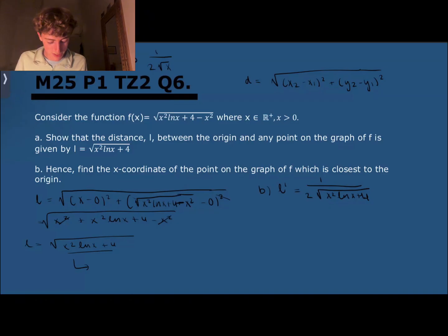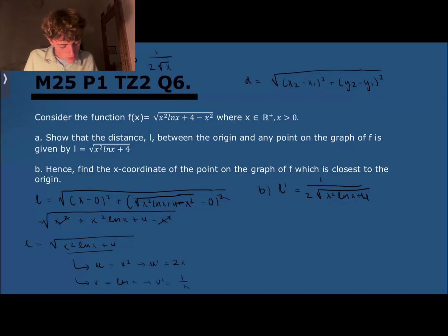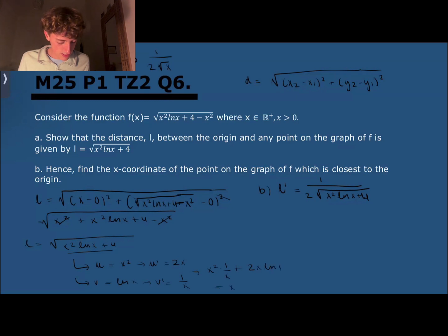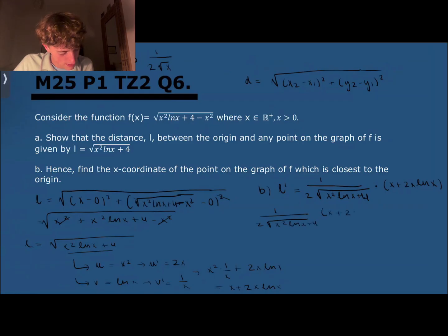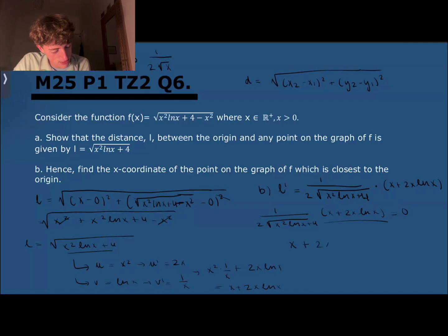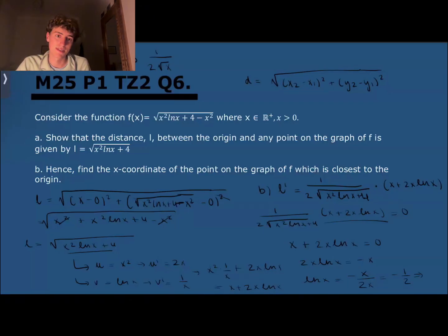The derivative of x² ln x requires the product rule: u = x², u' = 2x; v = ln x, v' = 1/x. So the derivative is x² times (1/x) plus 2x ln x, giving x plus 2x ln x. Setting the full derivative equal to zero, since the fraction out front is never zero, we simplify to x plus 2x ln x = 0. Factoring, 2x ln x = minus x, so ln x = minus 1/2. Therefore x equals e to the power of minus 1/2 — that's the x-coordinate of the point closest to the origin.